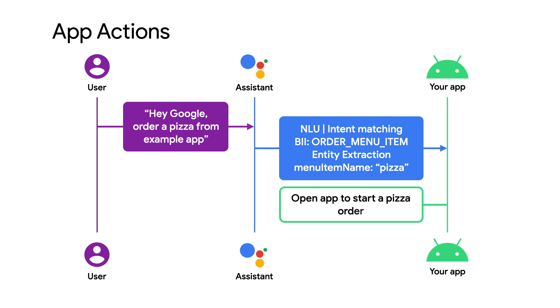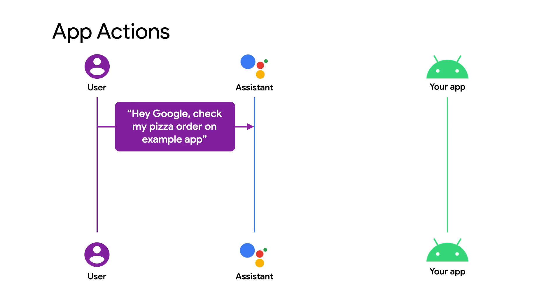Assistant opens the Android app, passing the data extracted from the user's voice request, and opens a screen that starts a pizza order. That's great for starting a pizza order, but when you're hungry and waiting for food, you want to know the status of your order quickly. You don't want to wait for a whole app to open just to find out about your order. So when you say, hey Google,